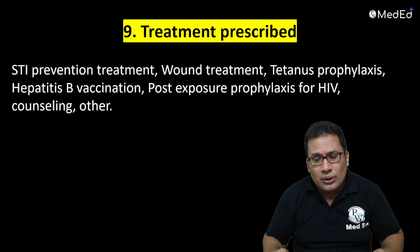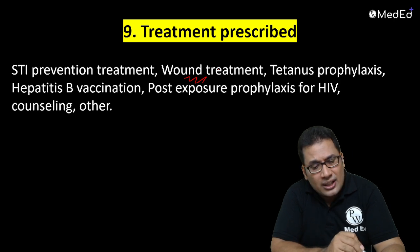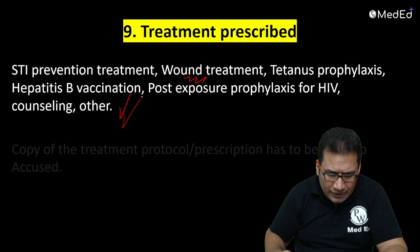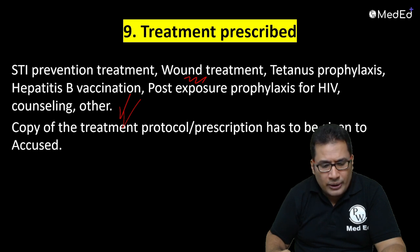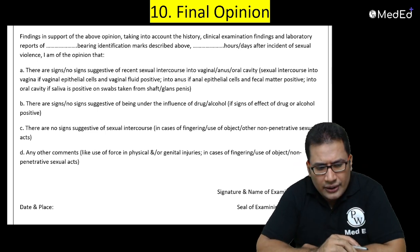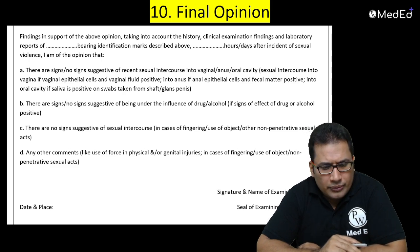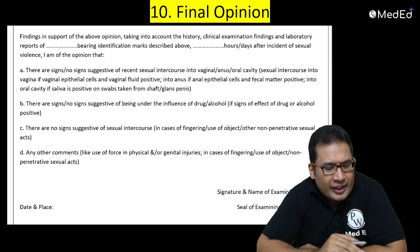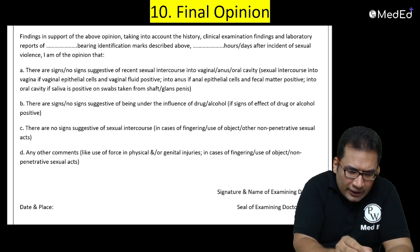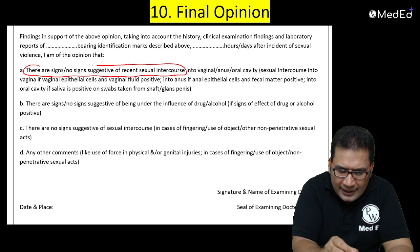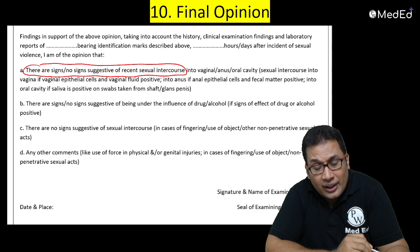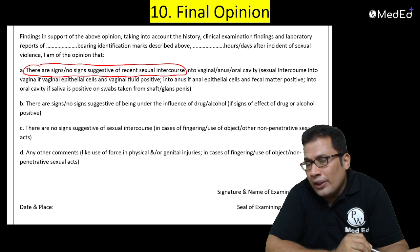The provisional and final opinion can be written as: 'There are signs suggestive of recent sexual intercourse' — or 'There are no signs suggestive of recent sexual intercourse.' Sexual intercourse can be vaginal, anal, or oral. The opinion is based on the presence of vaginal epithelial cells on the penis (indicating vaginal intercourse), anal epithelial cells on the penis (indicating anal intercourse), or saliva-positive swabs from the glans (indicating oral intercourse).